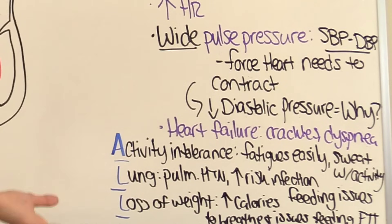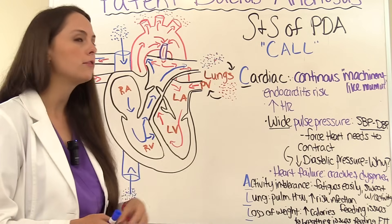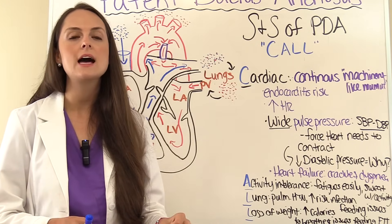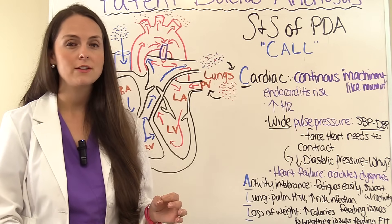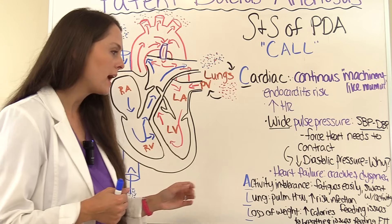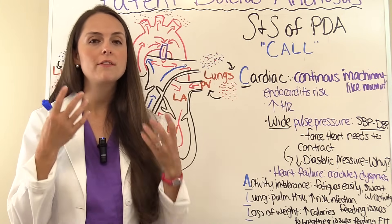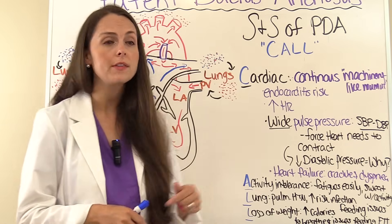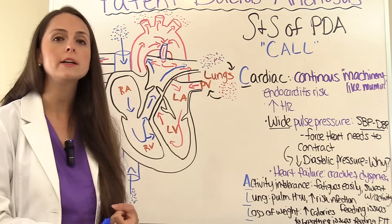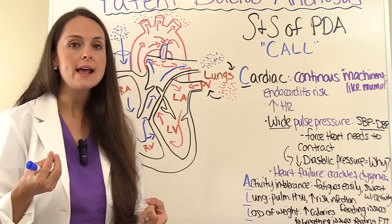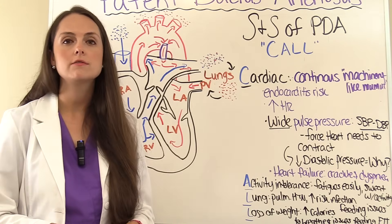The first L in CALL stands for lung. Pulmonary hypertension from increased blood flow narrows the arteries feeding the lungs, decreasing lung function. Patients are at risk for more infections and will have problems feeding — a baby trying to nurse or suck on a bottle while having respiratory issues will struggle. The second L stands for loss of weight, as these infants burn a lot of calories to breathe and can't get enough caloric intake due to feeding difficulties, putting them at risk for failure to thrive.